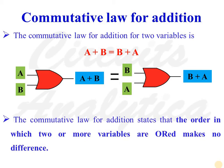First of all, let us discuss Commutative Law for Addition. The commutative law for addition for two variables is: A plus B is equal to B plus A. It states that the order in which two or more variables are ORed makes no difference.